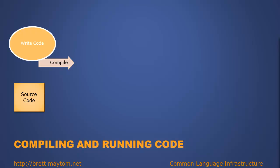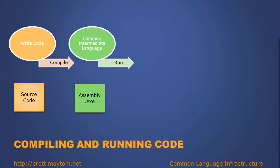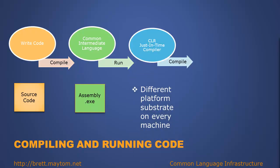Let's look at the compiling and running of code. As a developer, you write code in your CLS compliant language and compile that source code. That source code then gets compiled into the common intermediate language, which is in the form of an assembly, normally with a .exe extension. When the actual code is run, the common language runtime — in particular the just-in-time compiler — will compile that code into native code.